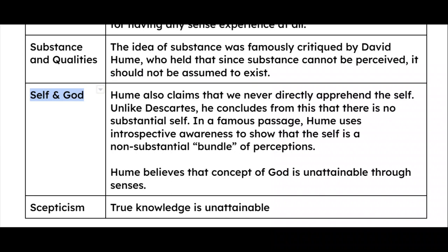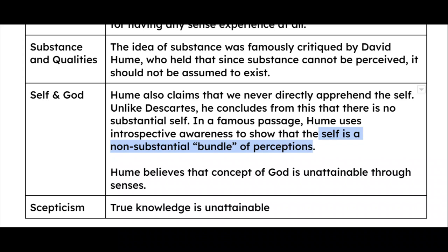Now let's see about self and God. Hume claims that we never directly apprehend the self — this was also said by Berkeley. Unlike Descartes, who accepted the self somewhat because he was into dualism, Hume concludes that there is no substantial self. Berkeley was also in the same line of not believing in the self. In a famous passage, Hume uses introspective awareness to show that the self is a non-substantial bundle of perceptions — meaning it has no substance or attributes of substance; it is basically just a bundle of perceptions, and whatever you perceive is what you believe.